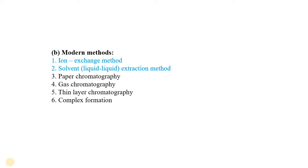Now the modern methods: the most popular are the ion exchange method and solvent extraction — also called liquid-liquid extraction — using water and an extracting solvent. Other modern methods include paper chromatography, gas chromatography, thin-layer chromatography, and complex formation, with ongoing research producing many papers using these techniques for separation of lanthanides.